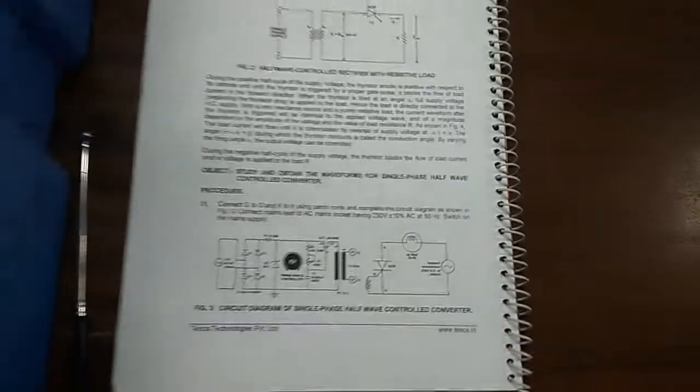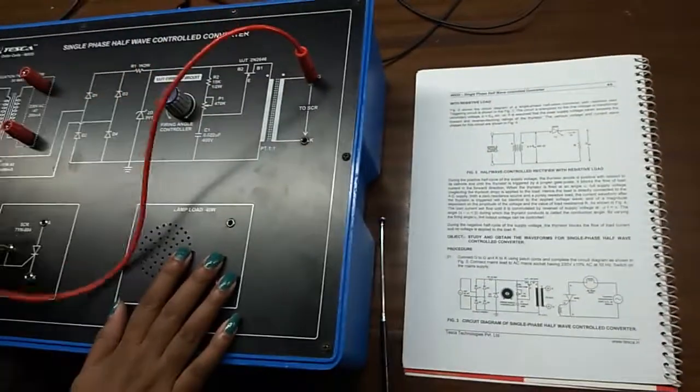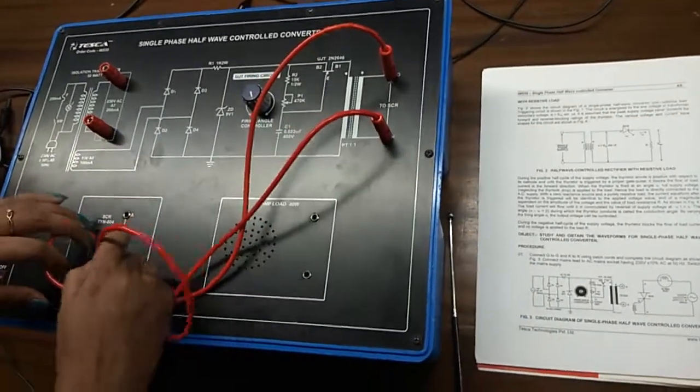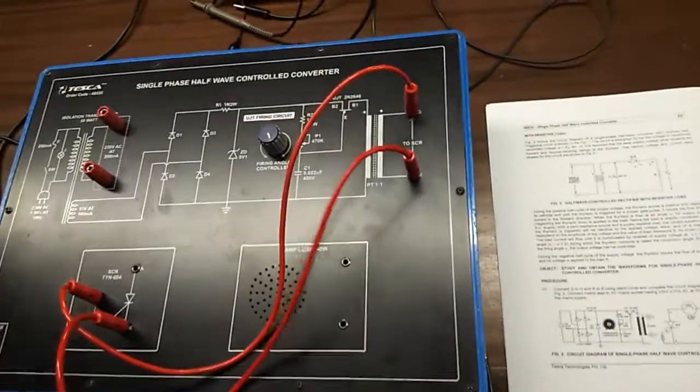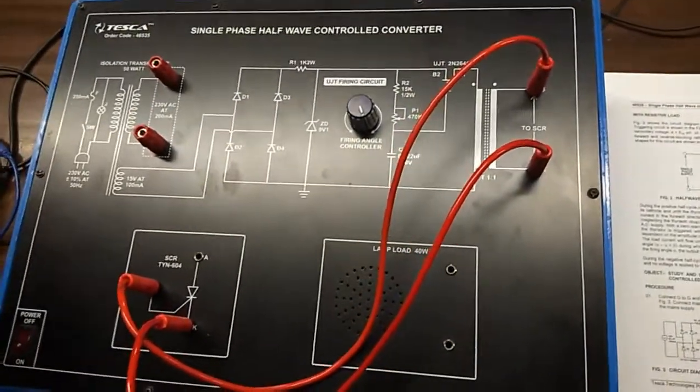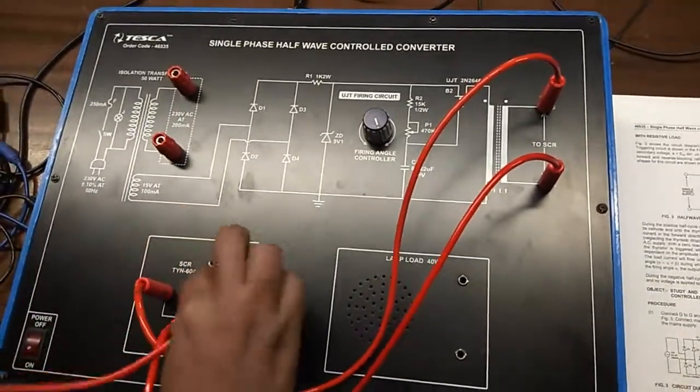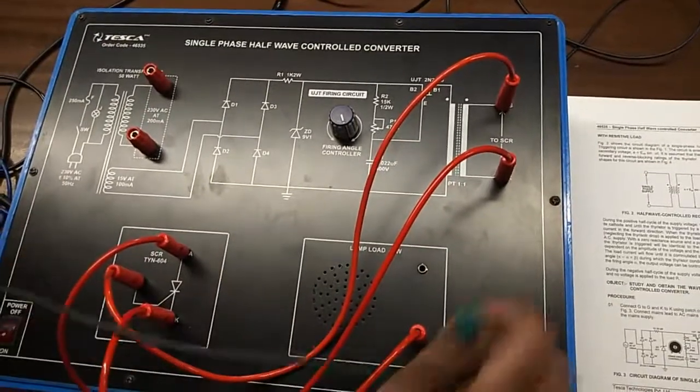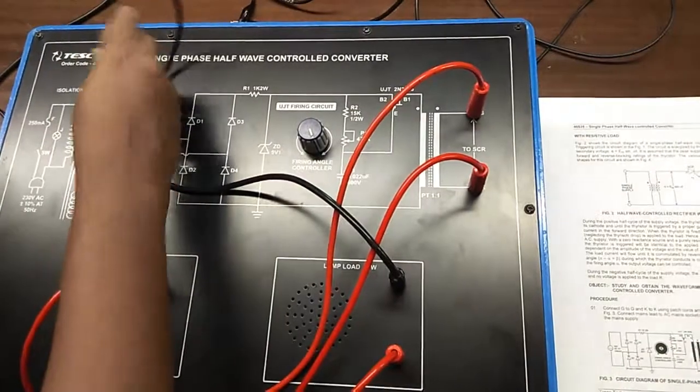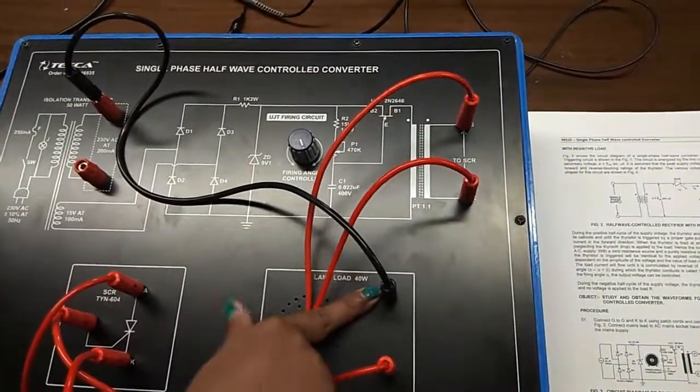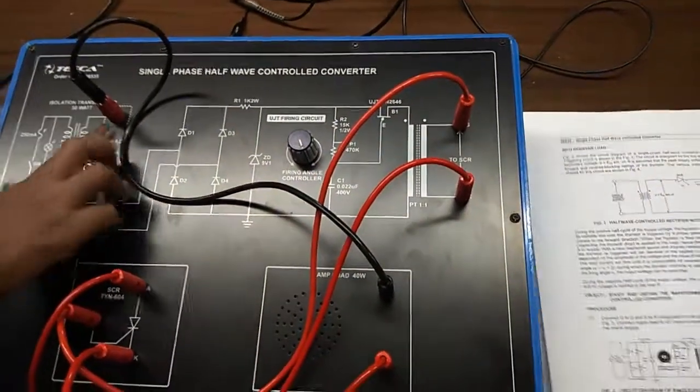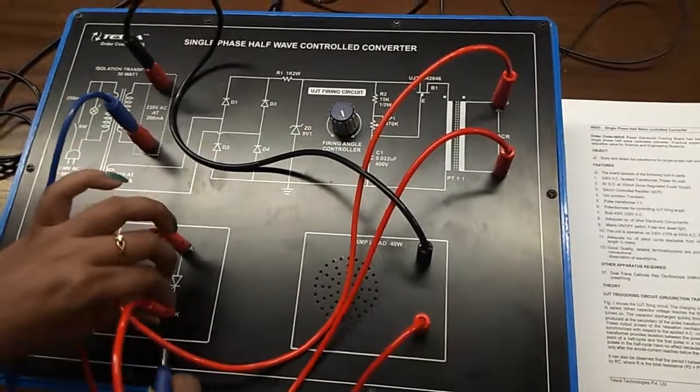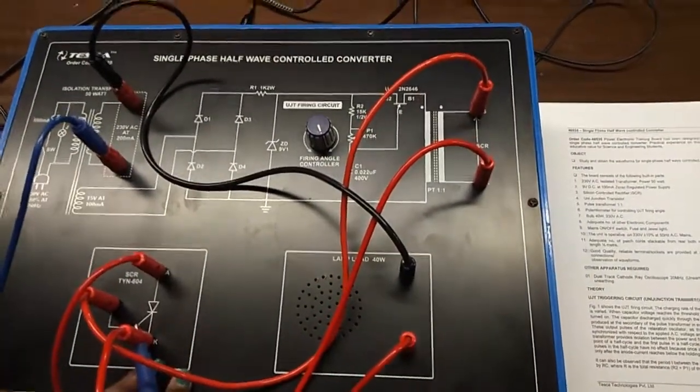First connect G to D, then connect K to K. After that, the anode of the SCR will be connected here to the load, and this will be connected with this. From this terminal it will be connected with the secondary winding of the isolation transformer, and this will be connected with K.